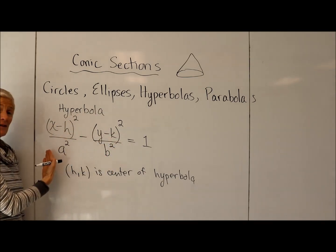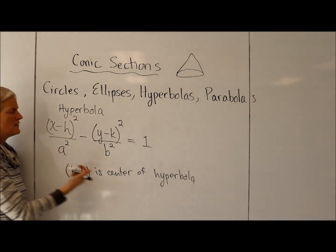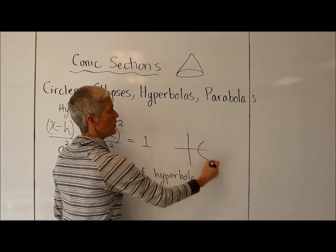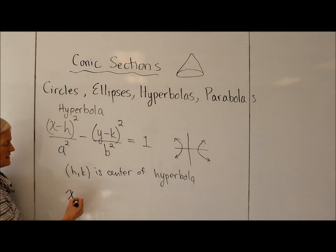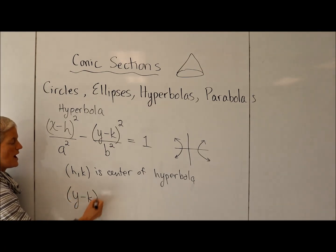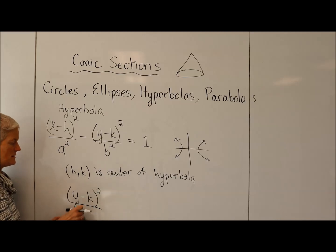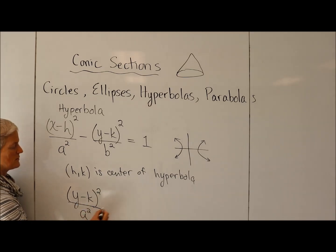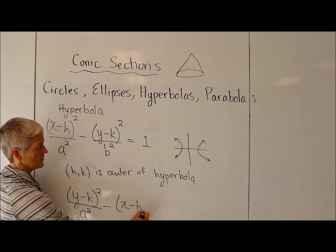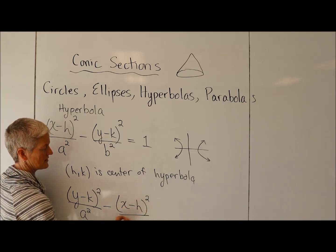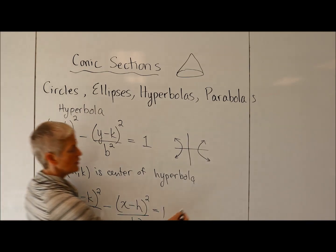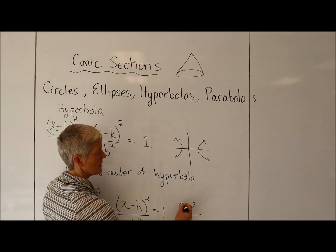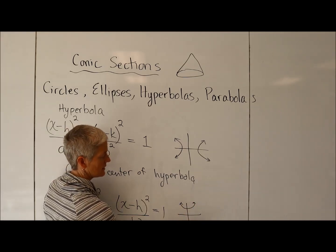When the X squared term is positive, you're going to have a hyperbola that opens along the X axis. If instead my Y term is the positive one — it doesn't really matter where I put my X and my Y or my H and my K — when the Y squared term is positive, your hyperbola instead is going to open up and down.